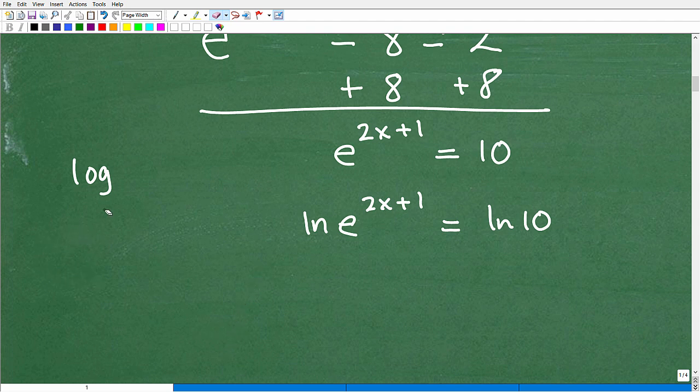I'm going to erase this, and what I want to do is bring down this 2x plus 1. So, I'm going to put this in front of the ln e, so that's going to be 2x plus 1, ln e equals ln 10.